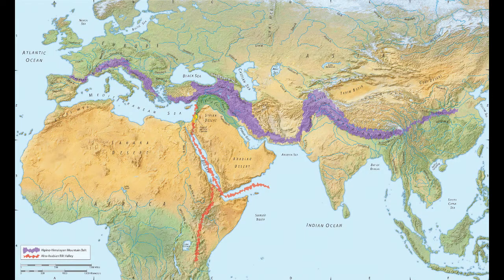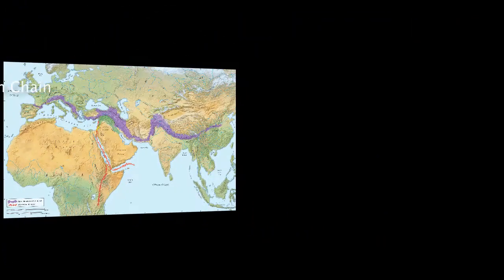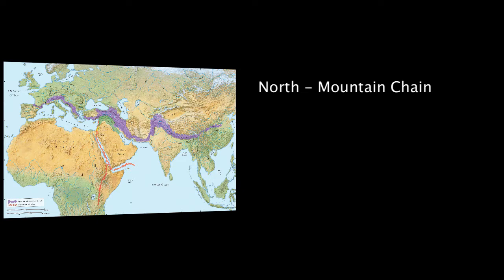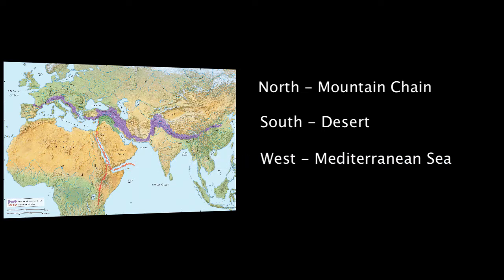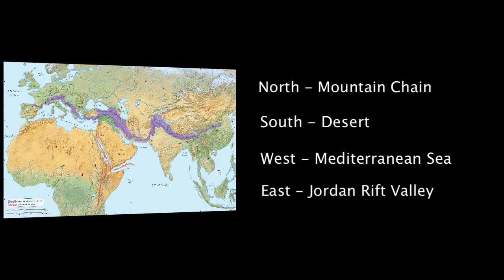When considering the strategic position of Israel and travel in the ancient Near East in general, there were four barriers that really came into play. Heading north, we ran into a northern mountain chain. To the south we had deserts, which were very difficult. To the west we had the Mediterranean Sea, and then to the east we had the Jordan Rift Valley. Let's look at these quickly.